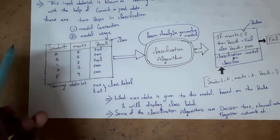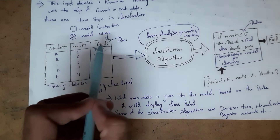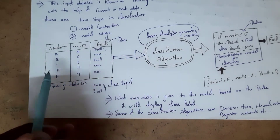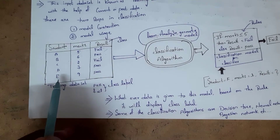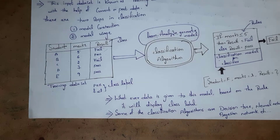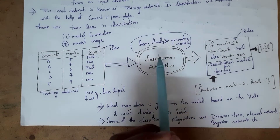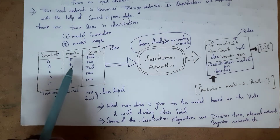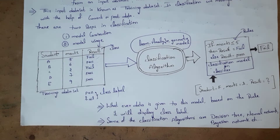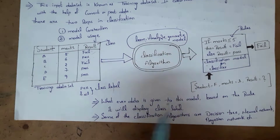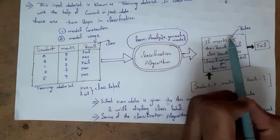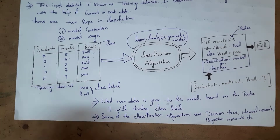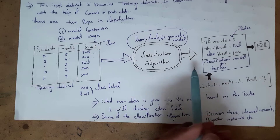How will it learn the data set? It will check each and every object. Student A got 5 marks so his result is fail; student B got 6 marks so his result is pass; student C got 2 marks so his result is fail; student D got 7 marks so his result is pass; student E got 9 marks so his result is pass. After learning, the algorithm analyzes: students who got more than 5 marks passed, and students who got 5 marks or less failed. It then creates a model with rules: if marks is less than or equal to 5 then result equals fail, else result equals pass. We call this the classification model or classifier.